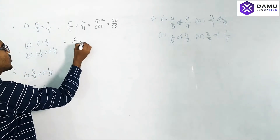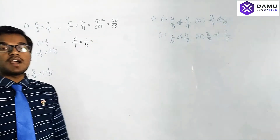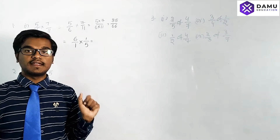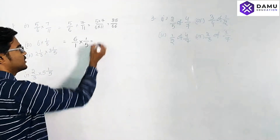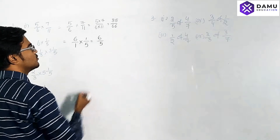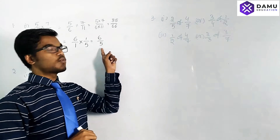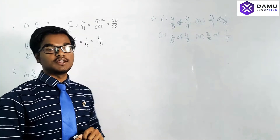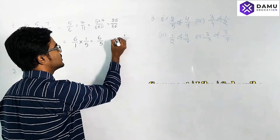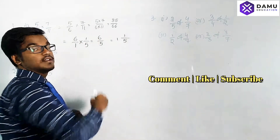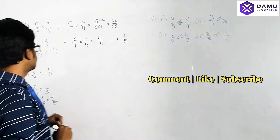Next: 6 into 1/5. We write 6 as 6/1, so 6/1 into 1/5 gives 6/5. In the numerator 6, in the denominator 1, so 6 by 5. This is an improper fraction — we can write it as a mixed fraction: 1 and 1/5, because 5 ones are 5, plus 1 will be 6, giving 6/5.